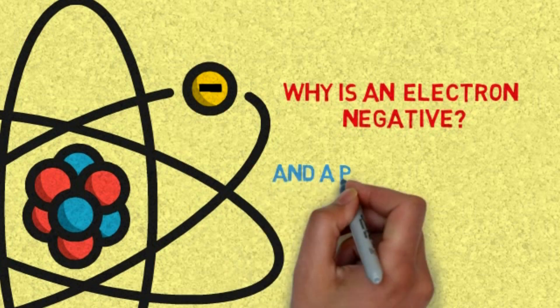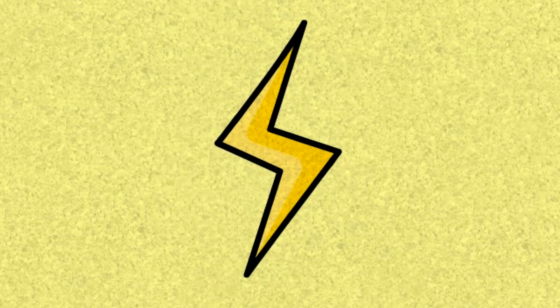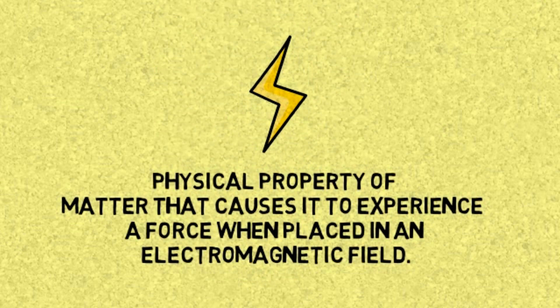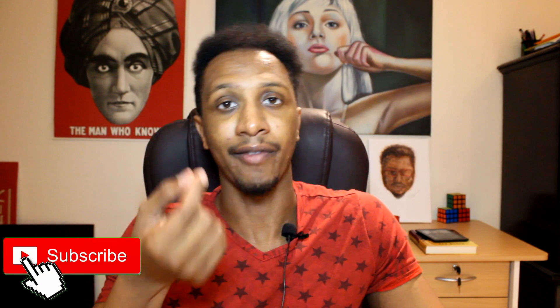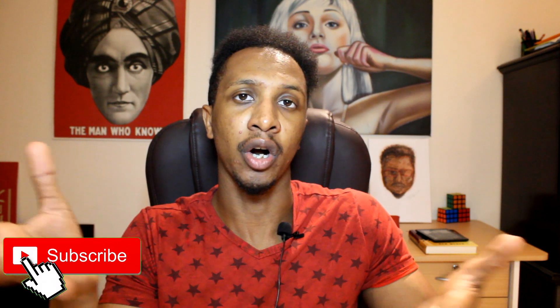What makes anything have the property of negative or positive charge? When we ask what makes something negative or positive, we're talking about a property called charge. Charge is a property that describes the behavior of matter inside an electromagnetic field. If you have a particle and you put it inside an electromagnetic field, the way it behaves dictates what charge it gets — whether it's positive or negative.